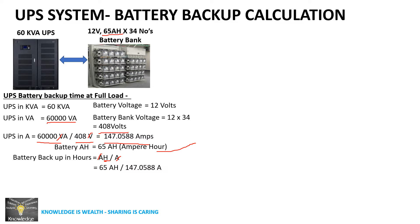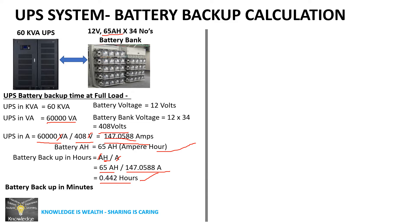The battery capacity is 65 Ah and we calculated the current as 147.0588 amperes. So 65 divided by 147 equals 0.4422 hours. To convert to minutes, multiply by 60: 0.4422 × 60 = 26.52 minutes.